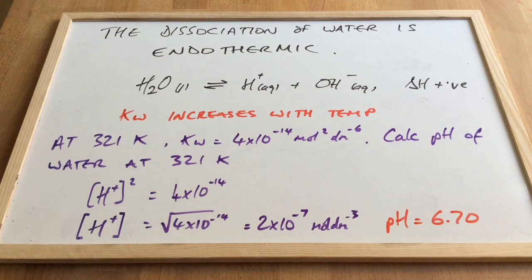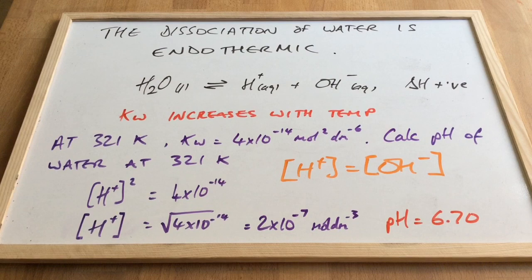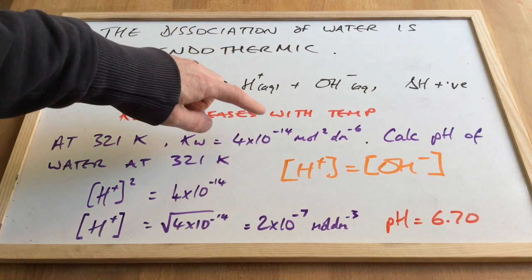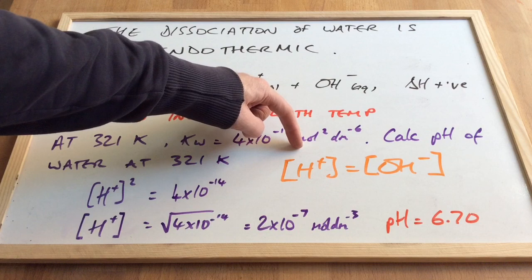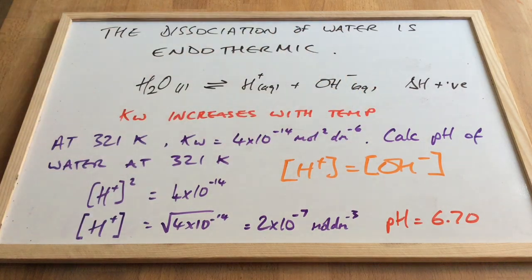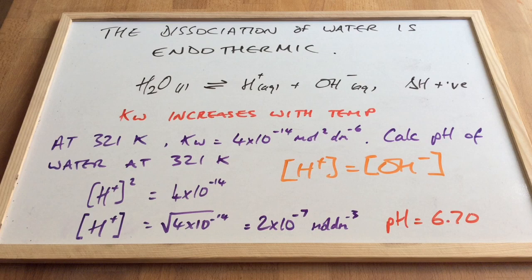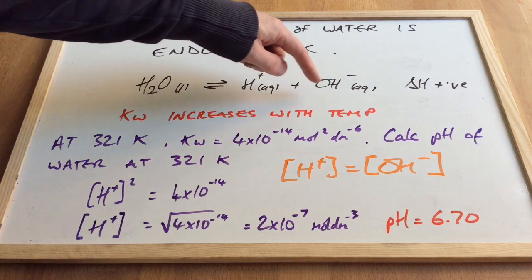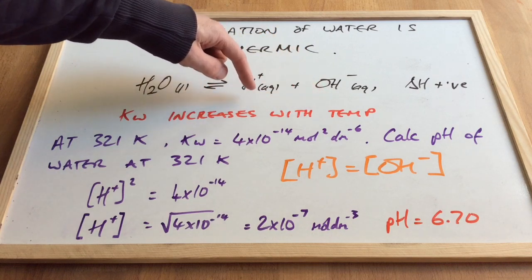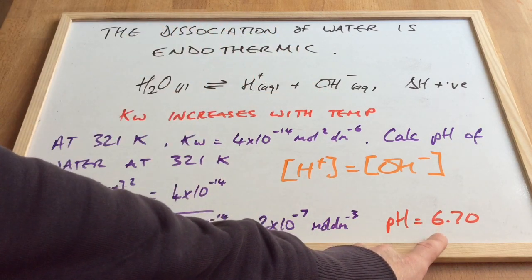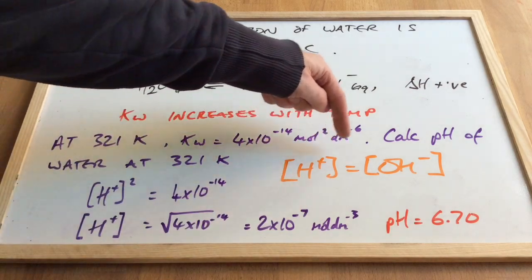So at 321 Kelvin, the pH of water is actually a little bit less than 7. But water is still neutral. So can you think why? And of course, it comes down to the fact that for a solution to be neutral, the hydrogen ion concentration is equal to the hydroxide ion concentration. And if we think about the dissociation of pure water, these will always be the same. So it doesn't matter what the temperature is. The pH, yes, the pH changes, but these are always the same.